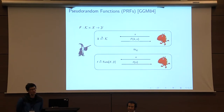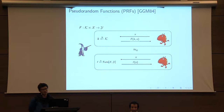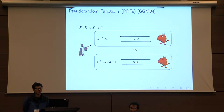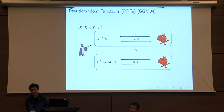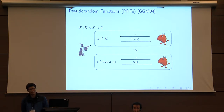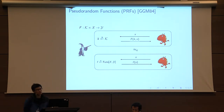Let me start off by recalling the notion of pseudorandom functions. Pseudorandom functions, or PRFs, are very basic building blocks in cryptography. It's a keyed function with some associated domain and range such that the following two distributions are indistinguishable. In the first distribution, an adversary makes adaptive evaluation queries and the challenger answers by evaluating the real PRF function f. In the second distribution, the challenger evaluates a truly random function. PRF security states that these two distributions are indistinguishable.